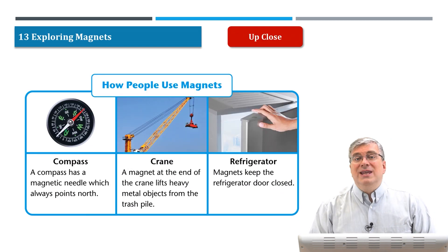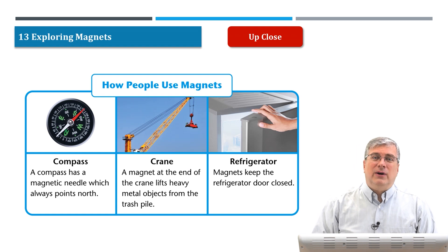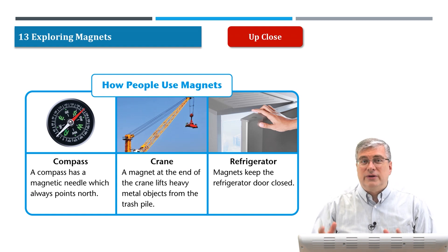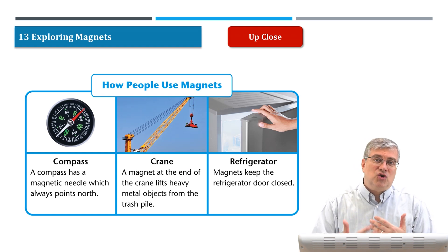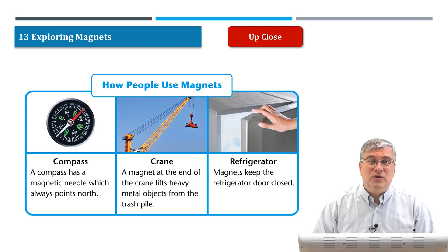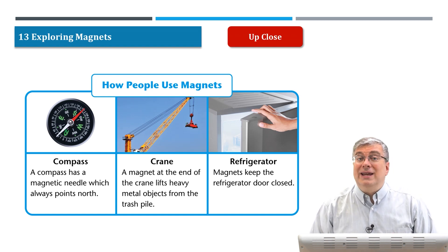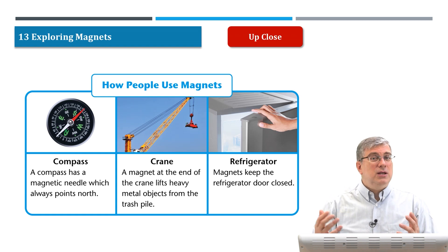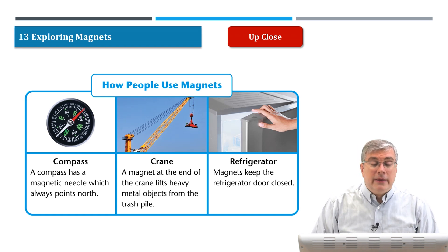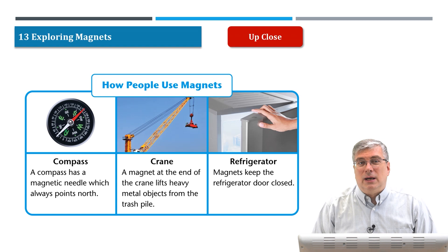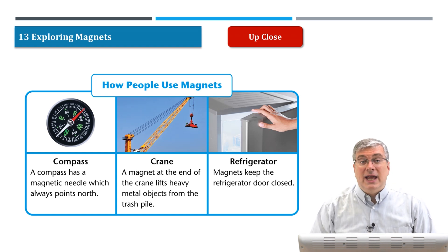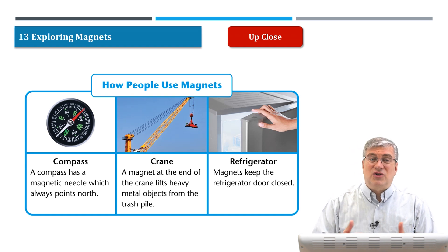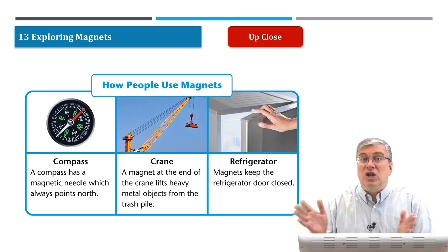So how do we use magnets? Magnets have this very interesting force around them. They can attract or repel other objects. We can find very interesting uses for magnets, and magnets are being used all around us every day. There's one very common use of a magnet that's been in use for hundreds of years — it used to help people find direction, find out which way to go.